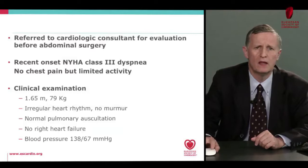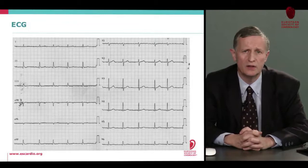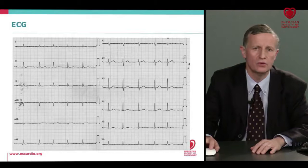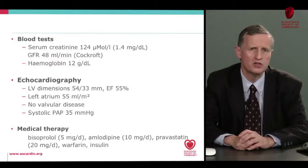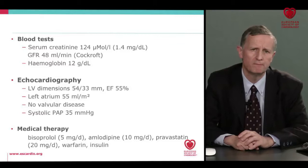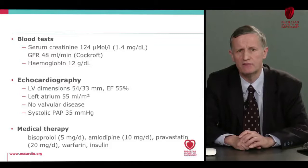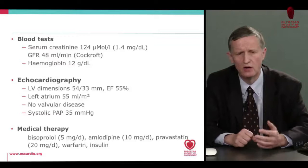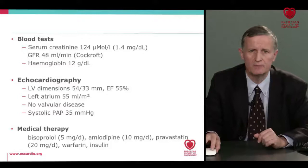Clinical examination shows mainly irregular heart rhythm and no signs of heart failure, with normal blood pressure. Electrocardiogram shows atrial fibrillation with normal heart rate and no other abnormalities — no sequelae of necrosis and no abnormalities of repolarization. Serum creatinine is mildly elevated with a GFR of roughly 50 ml/min, and hemoglobin is normal. Echocardiography showed normal left ventricular dimensions, normal ejection fraction, mildly enlarged left atrium, and no valvular disease. Medical therapy includes beta-blockers, calcium channel blockers, pravastatin, warfarin recently introduced for AFib, and insulin.